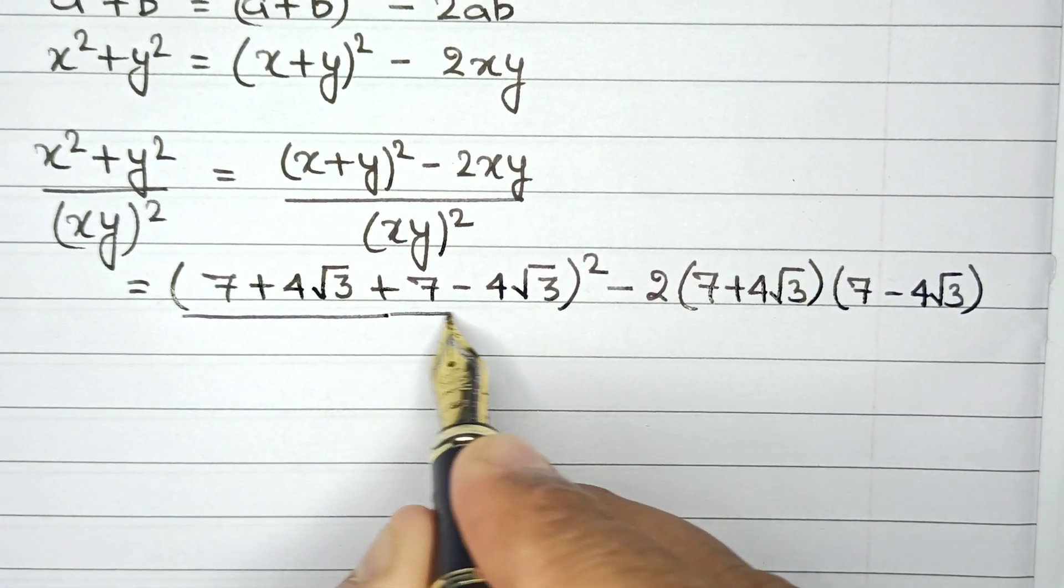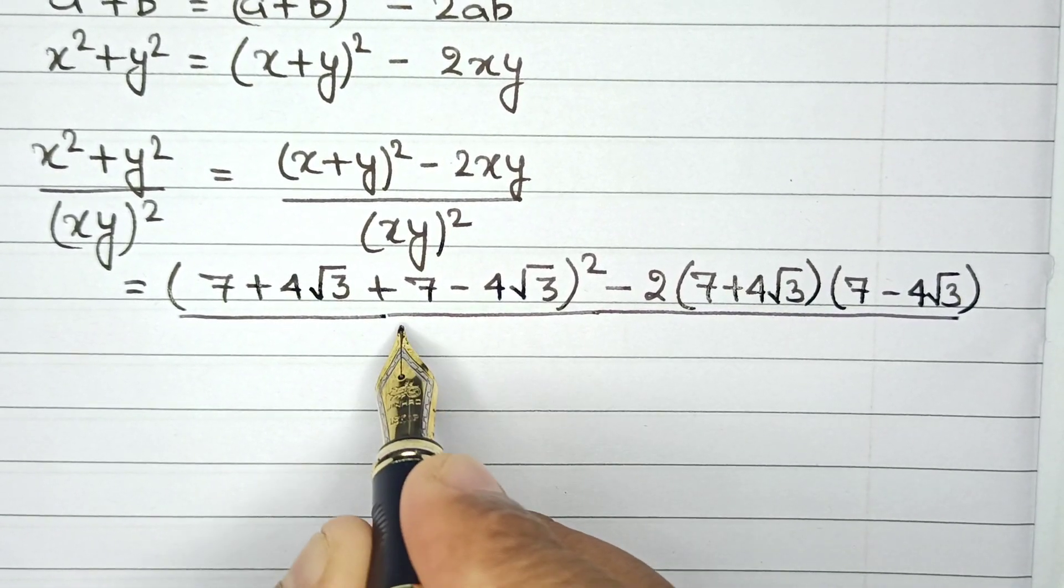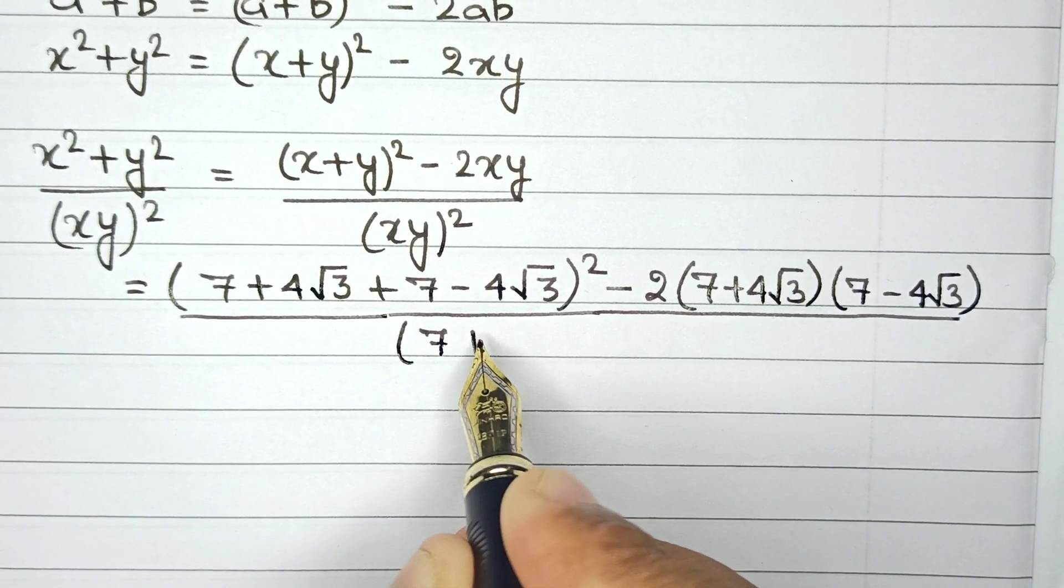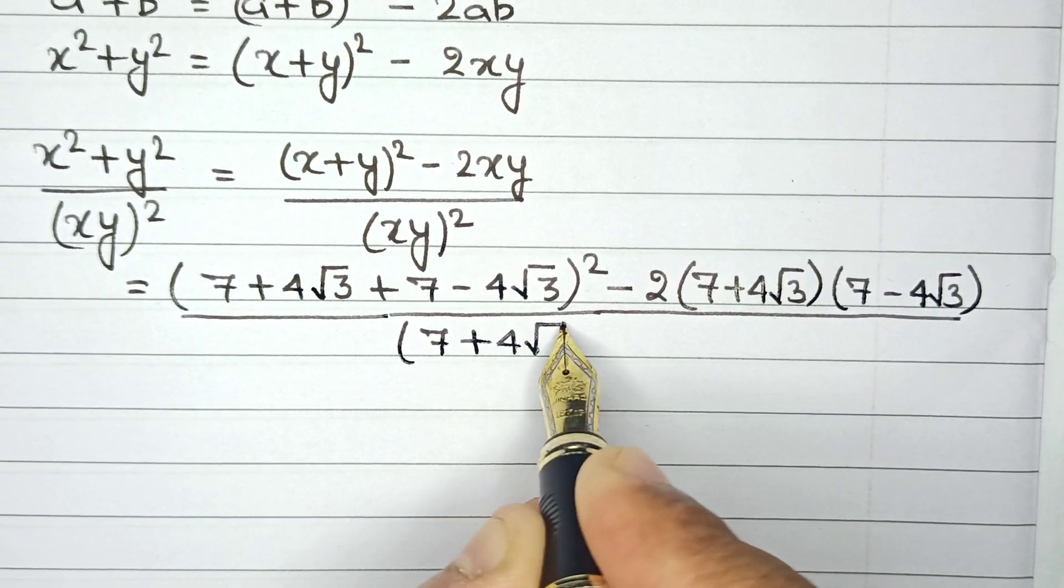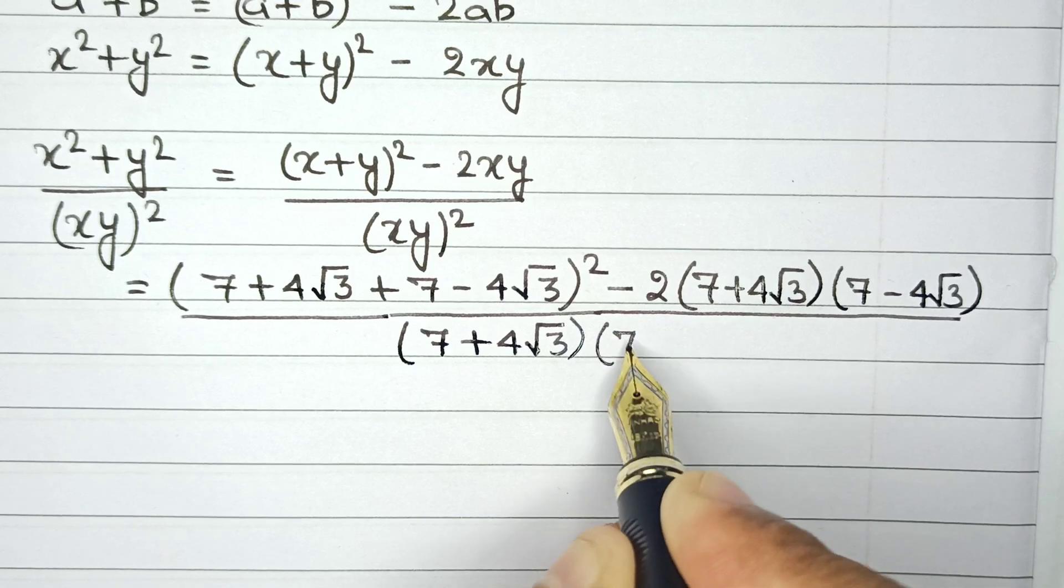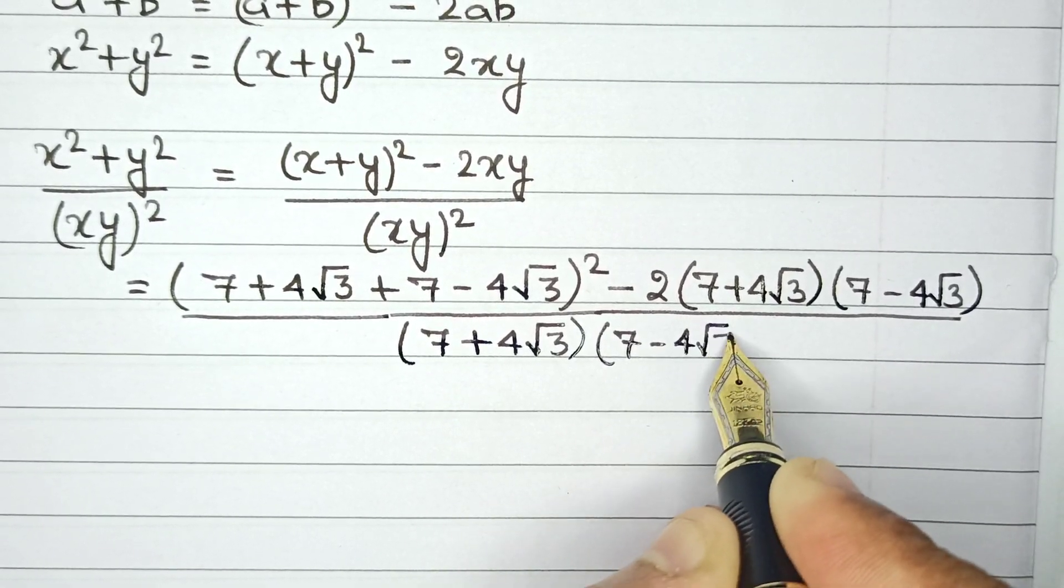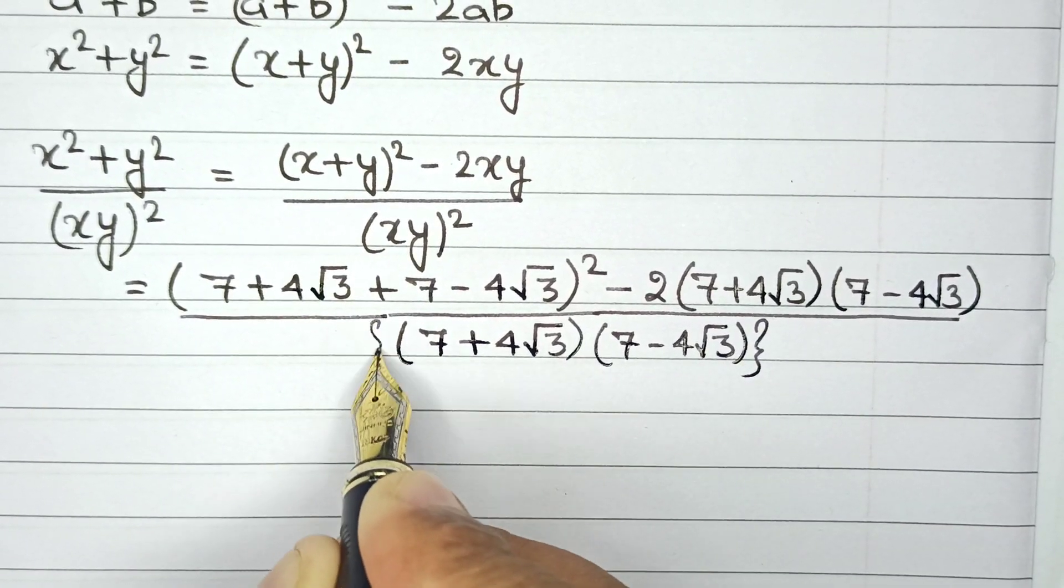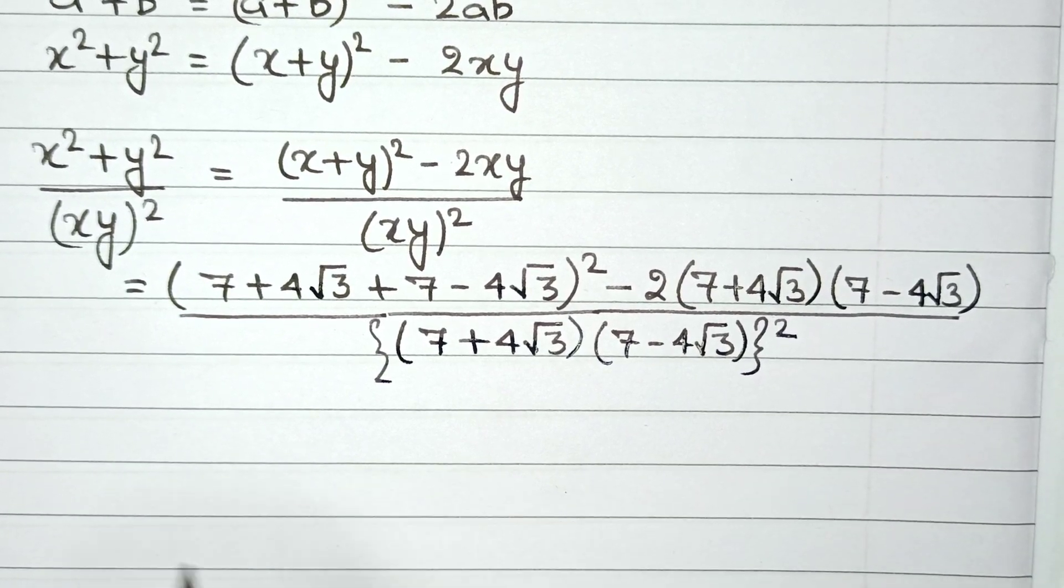We also have a denominator. In this denominator, we have xy whole square, which is 7 plus 4 root of 3 multiplied by 7 minus 4 root of 3. And this we raise the denominator to the power of 2.